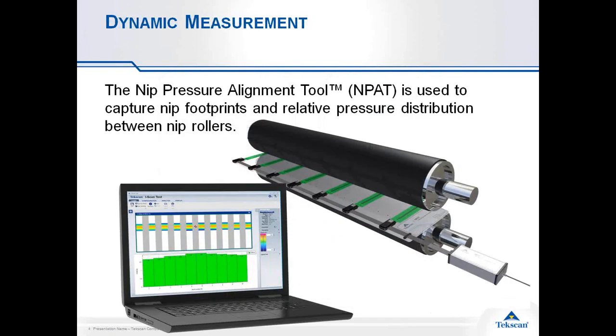The NIP Pressure Alignment Tool basically takes a bunch of pH-resistant sensing bands and places them on an array that can be configured to the size of a roll. These sensors verify the NIP pressure and the NIP width along the length of the roller, verifying uniformity.